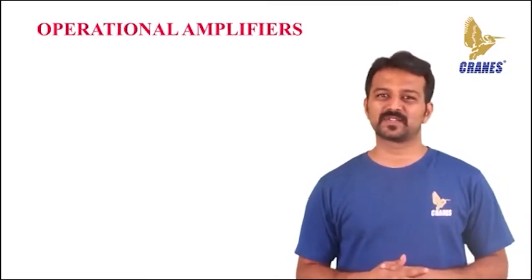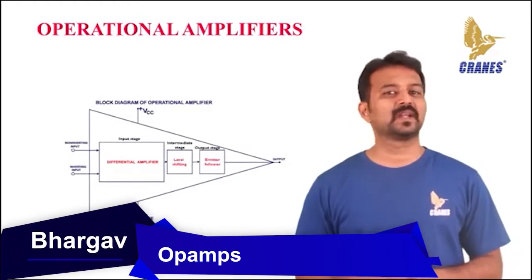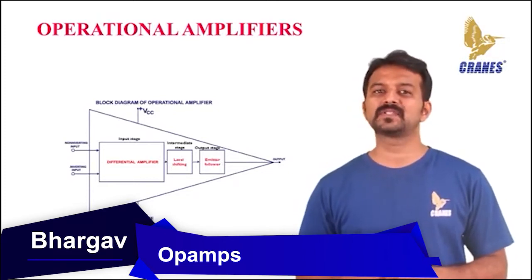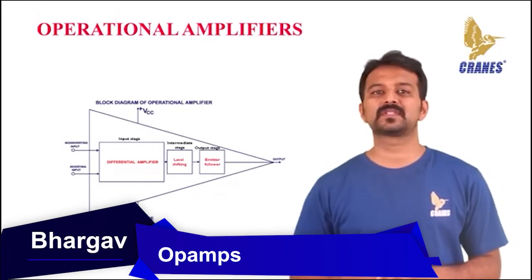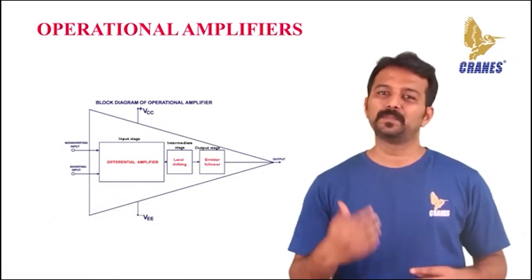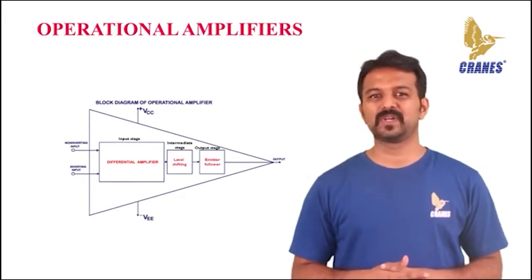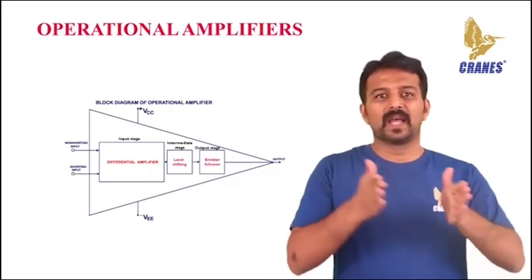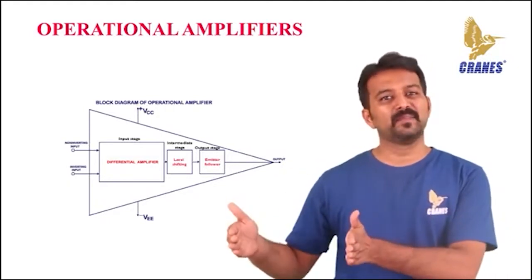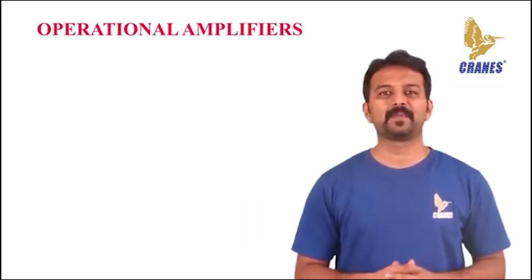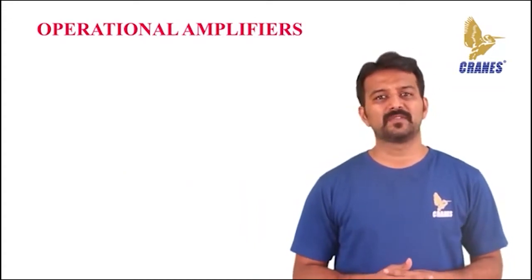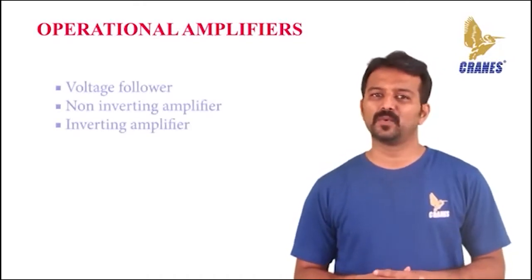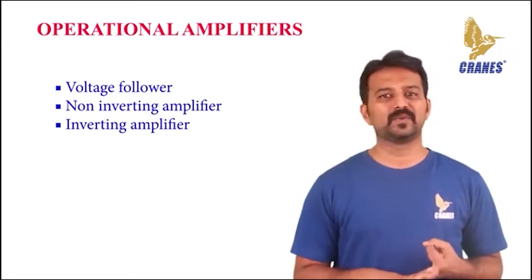The next topic we would discuss is operational amplifiers. Operational amplifiers, commonly known as op-amps, are very high gain amplifier circuits which have two high impedance input terminals and one low impedance output. The input terminals are identified as inverting input and non-inverting input. The basic op-amp circuit consists of a differential amplifier input stage, level shifting intermediate stages, and an emitter follower output stage. Op-amps can be employed for many circuit applications using various combinations of externally connected components. The simplest of these are voltage followers, non-inverting amplifiers, and inverting amplifiers.